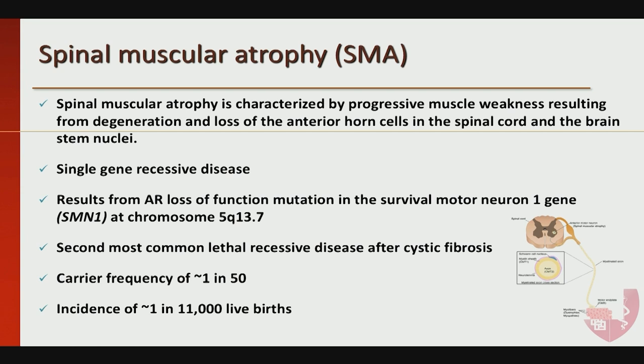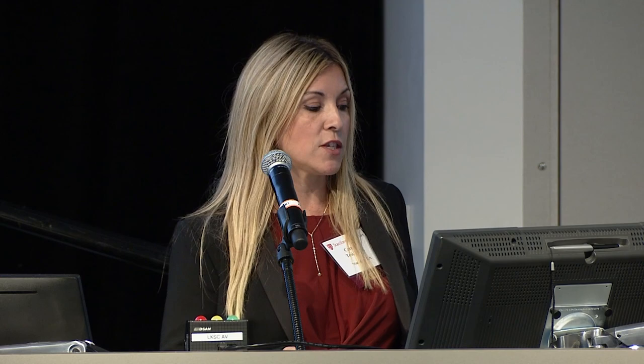SMA results from loss-of-function mutations in the survival motor neuron 1 gene — it is the second most common lethal genetic disease after cystic fibrosis. With newborn screening, we're going to expect to see many more patients coming to our clinics for early intervention. The carrier frequency is 1 in 50, so chances are that even in this room we have carriers of this disease. The incidence varies between reports, ranging from 1 in 11,000 to 1 in 20,000.